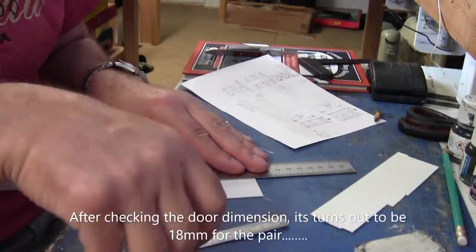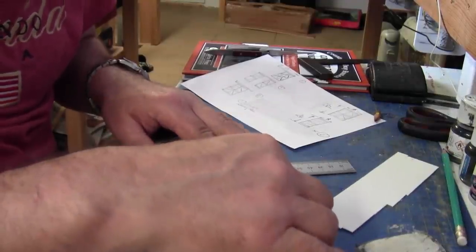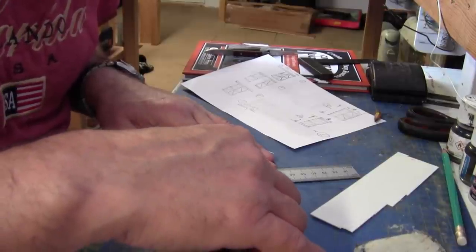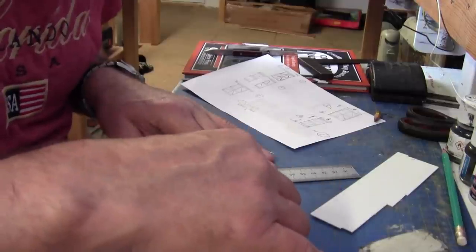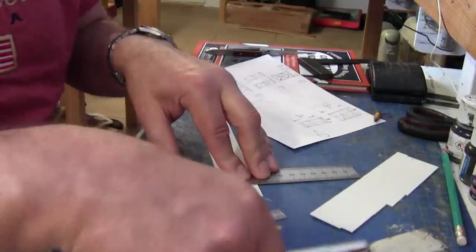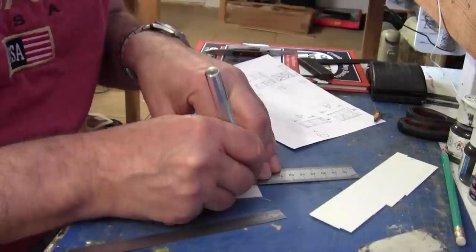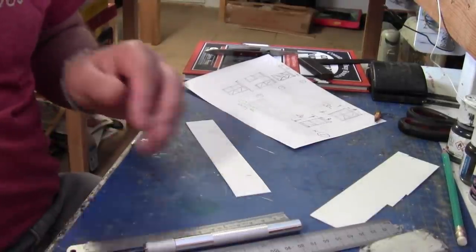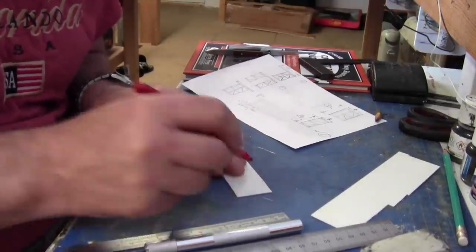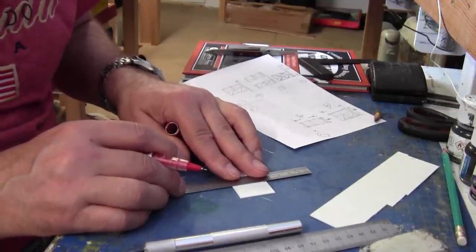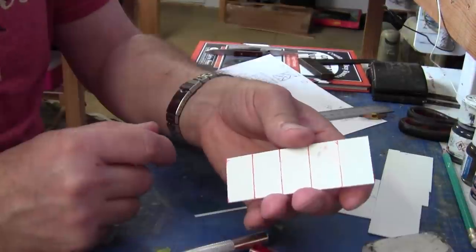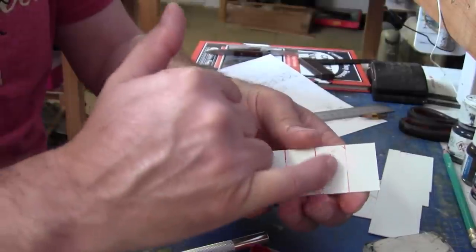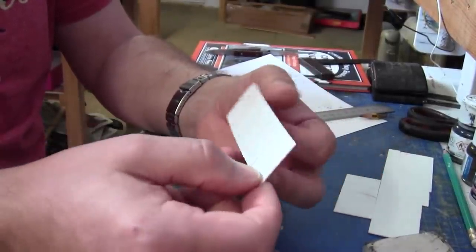Now that we've cut our strip of plastic card to the height of the doors which was 30mm. Now I'm going to separate the doors individually. So I'm marking out 18mm per double doors. And I'm just going to deeply score them. And then I'm going to mark them with a pen. So I can identify each pair of doors.